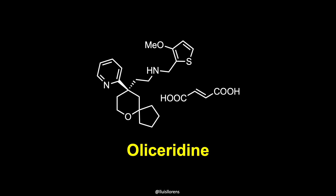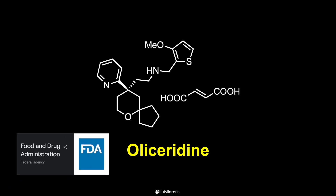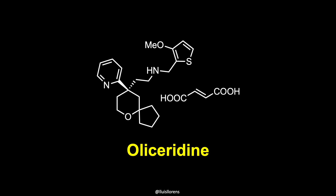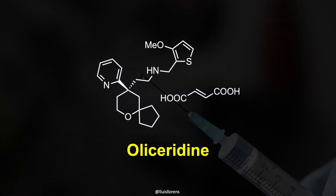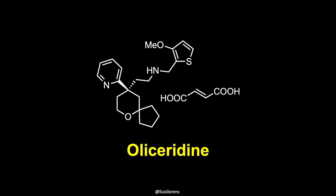Hello everyone. In this video I'm going to talk about olisiridine, an opiate medication that was approved by the FDA for the treatment of moderate to severe acute pain in adults. The medication is indicated for short-term intravenous use in hospitals and other controlled clinical settings.